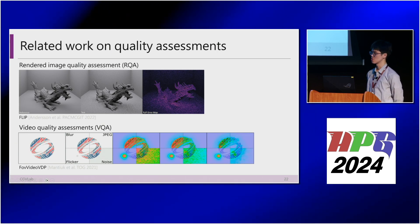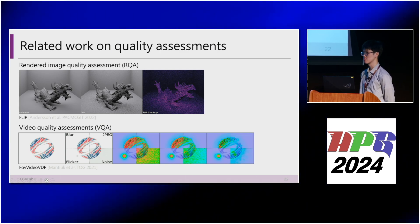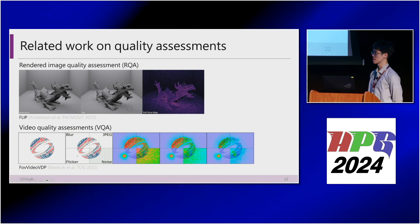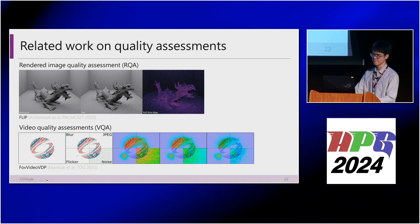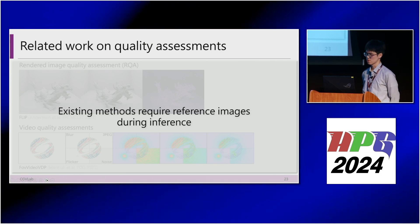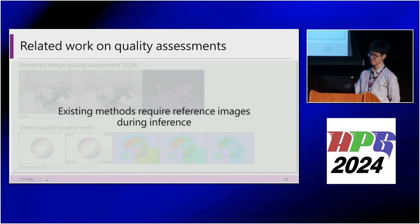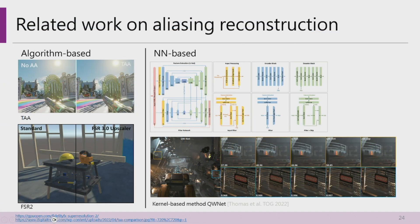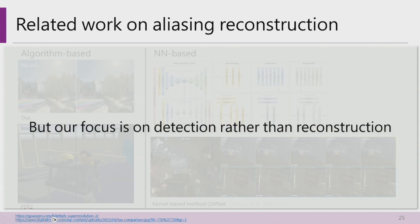In addition to quality metrics like PSNR and SSIM, other work focuses on different inputs like rendered images or video. However, these methods require reference images, which are difficult to acquire during inference. Other work focuses on aliasing reconstruction, like TAA or FSR2, some using neural networks. But our focus is on detection rather than reconstruction.